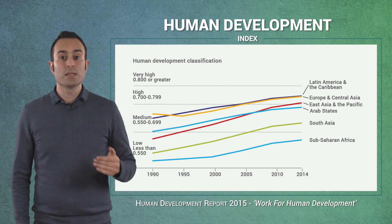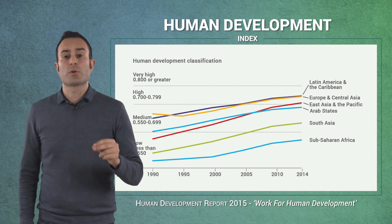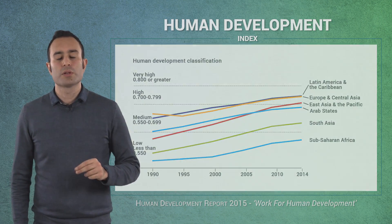An index developed by the United Nations which merges life expectancy, global domestic product per capita, and literacy rate for each country.